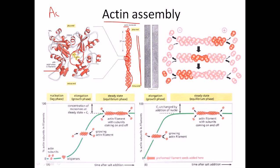In between the alpha helices and beta sheets, we can find the ATP binding site. This is really very important because an actin protein bound to ATP is very active, whereas an actin protein bound to ADP is not as active. This drives the formation of the actin filament — whenever an actin protein binds ATP, it is very much primed to attach with another actin to make a polymer.